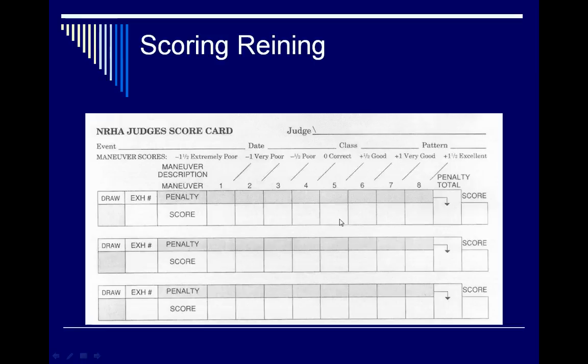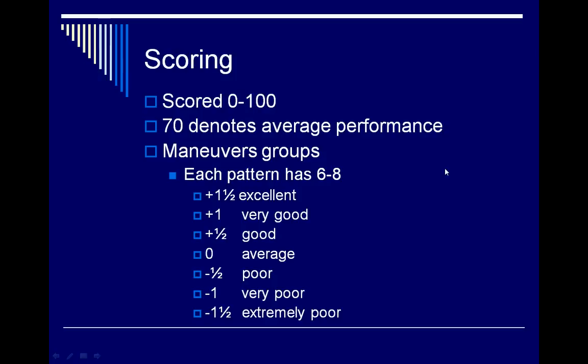You total the penalties, take your maneuver scores, and all of these numbers are added or subtracted from 70, which is our average score. We're scored on a basis of zero to 100, and 70 is our average performance.